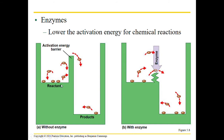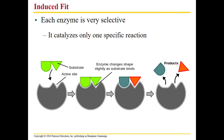Here we have an activation energy barrier. When we add an enzyme, it pushes that barrier down — it lowers the activation energy — making it easier to go from reactants to products. Enzymes have an active site where the substrate or reactants bind. This binding is called induced fit — that's why each enzyme works on only one reaction. The enzyme changes shape slightly as the substrate binds.